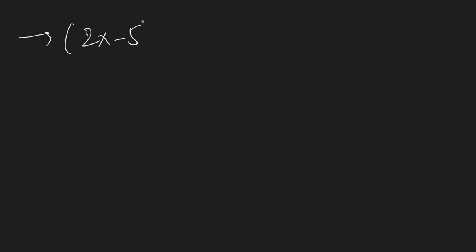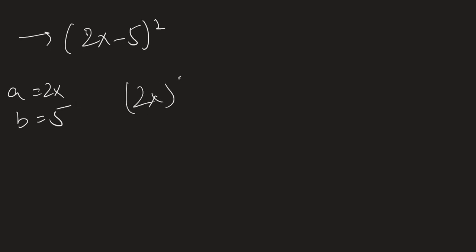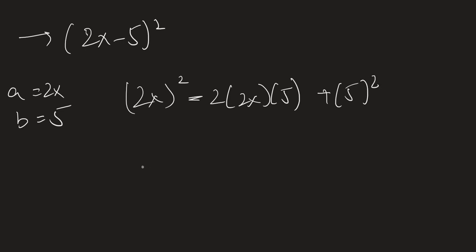Another example is 2x minus 5 whole square. Our a is 2x and our b is 5. So we get 2x whole square minus 2 times 2x times 5 plus 5 squared. This expands to 4x squared minus 20x plus 25.